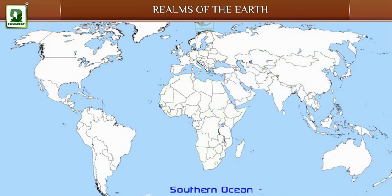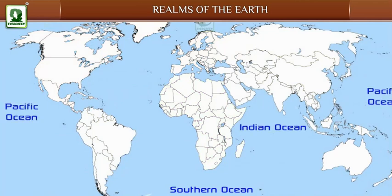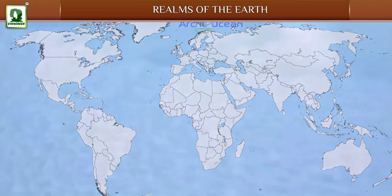The Southern Ocean, or the Antarctic Ocean: The large mass of water surrounding the continent of Antarctica is known as the Southern Ocean. It is in fact an extension of the Indian Ocean, Pacific Ocean, and Atlantic Ocean. A large part of the ocean remains frozen throughout the year. The Arctic Ocean is the smallest ocean. It surrounds the North Pole and remains frozen for most part of the year.